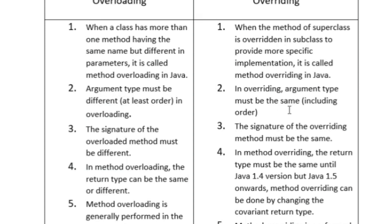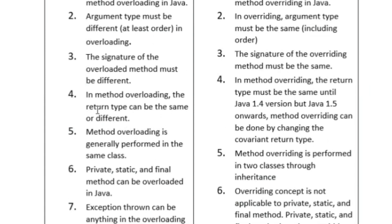In overloading, the argument type must be different, whereas in overriding the argument type must be same. The signature of the overloaded method must be different — method name and parameters are different — whereas in overriding the method signature must be same. In method overloading the return type can be same or different, whereas in method overriding the return type must be same until Java 1.4, but from Java 1.5 onward overriding can be done by changing the covariant return type.